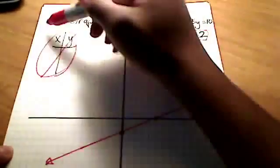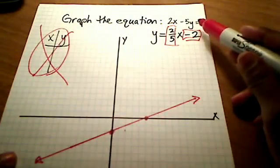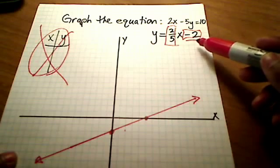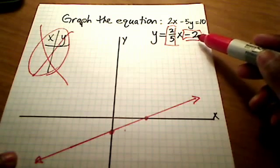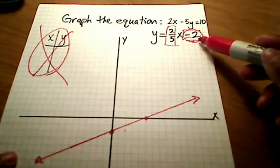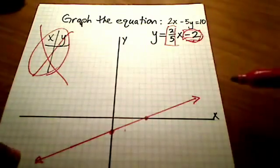So there it is. Without even doing a table at all, all I did was I isolated the y. And now that I've got my y completely by itself, I have an equation where I can pick off the y-intercept. That's the first thing I'm going to find. And then from there, I'm going to do the slope.